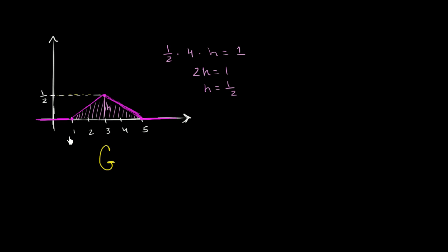And now we've constructed a legitimate probability distribution for our random variable g. Now given this non-continuous probability density function here, so once again, let me make it clear, this is the pdf, probability density function.